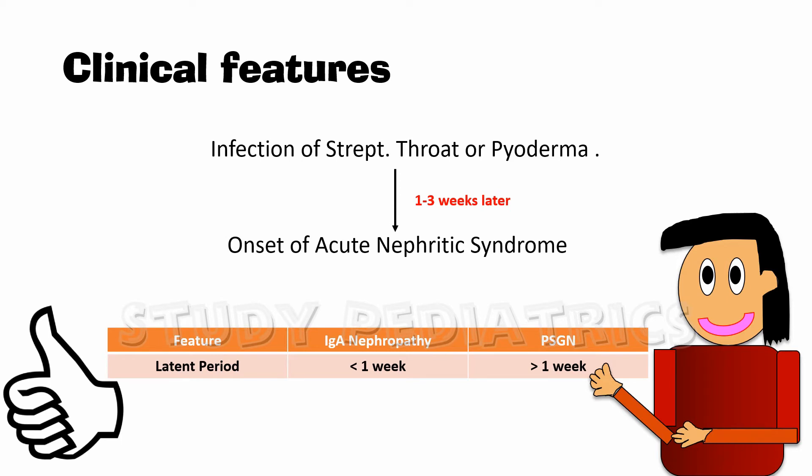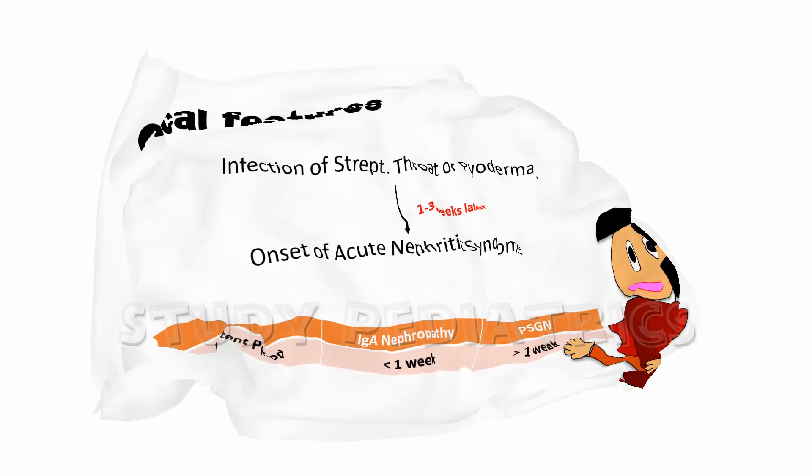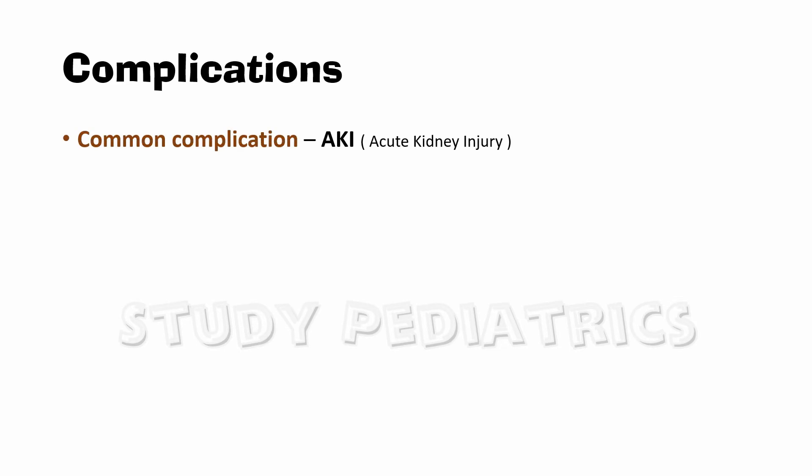Biological markers are more definitive and differentiating, but on clinical grounds, the latent period is key. The complication of progressive inflammatory glomerular disease is renal shutdown, or acute kidney injury (AKI).